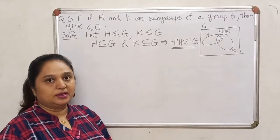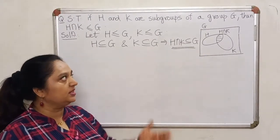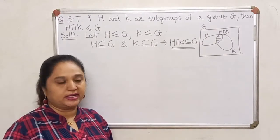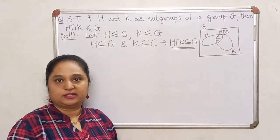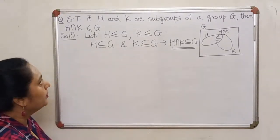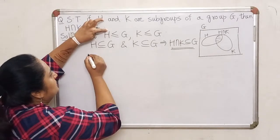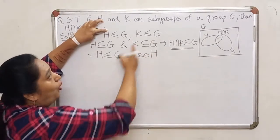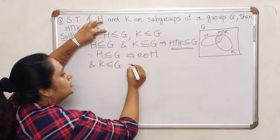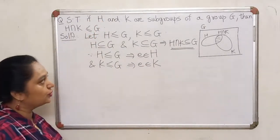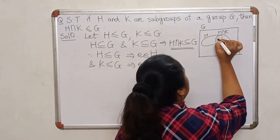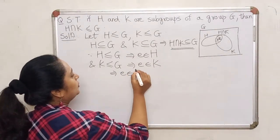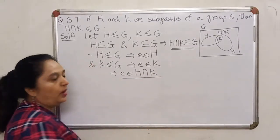Now, the next thing is the most important element. The intersection has to be non-empty, and to prove that, it is always best to show that the identity belongs to that set, because if it has to become a group, that is the first element that has to belong to it. Because H is a subgroup, the identity will definitely lie inside H. Also, K is a subgroup, so identity has to lie inside K as well. So identity is inside H as well as inside K, meaning it is in the common portion. Therefore, identity belongs to H ∩ K.